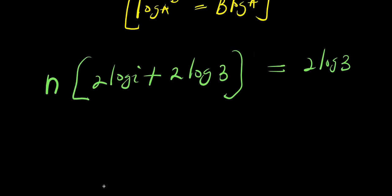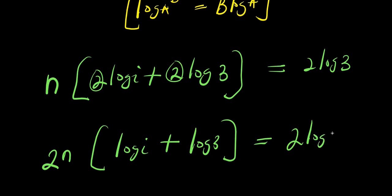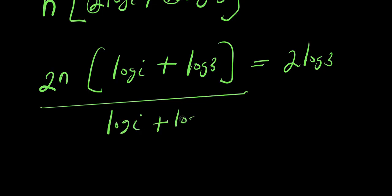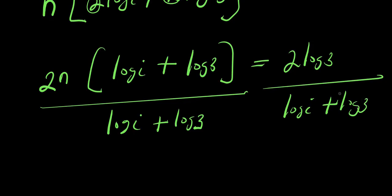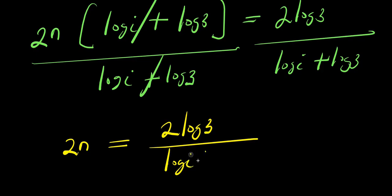So let's solve for n. At this point, there is a 2 here and a 2 here — I can factor that out. I can have 2 times n, times log i plus log 3, equals 2 log 3. So let's solve for n: I divide both sides by log i plus log 3, and this cancels. So what I'm going to have is simply 2n equals 2 log 3 divided by log i plus log 3.